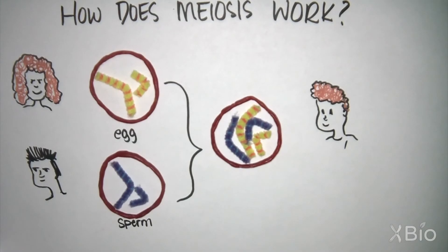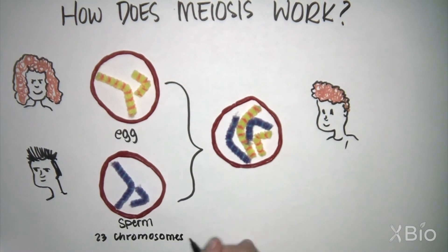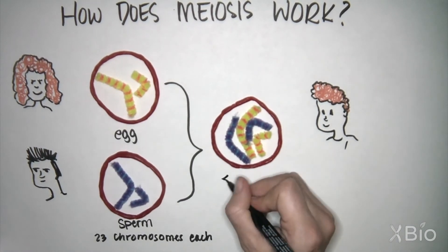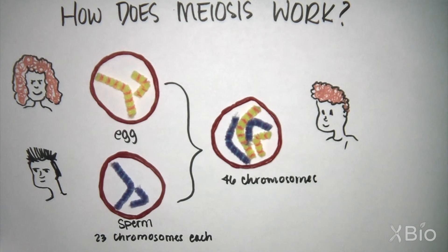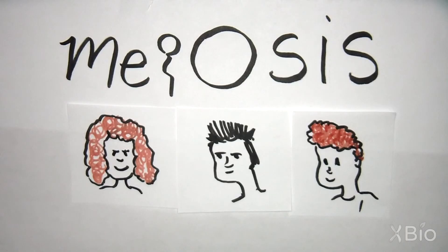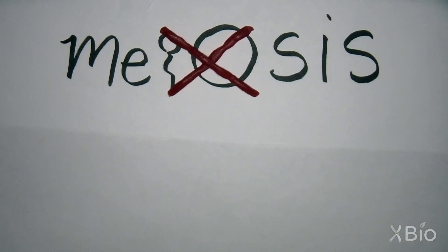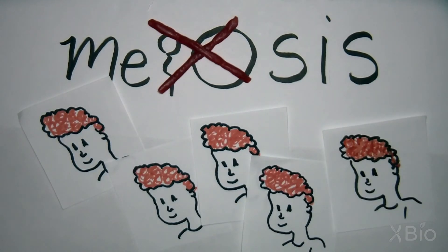Thus, when the gametes, the sperm and the egg, fuse together, we restore the normal number of chromosomes for the next generation. Can you now see how meiosis gives us the diversity that we see in our everyday lives? It's the reason you don't look identical to your mum or your dad. Without meiosis, we would all be clones of each other.